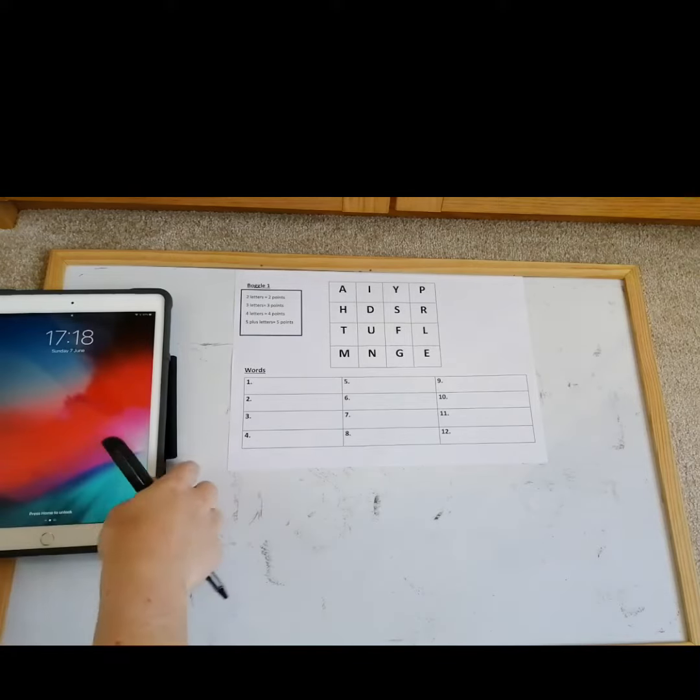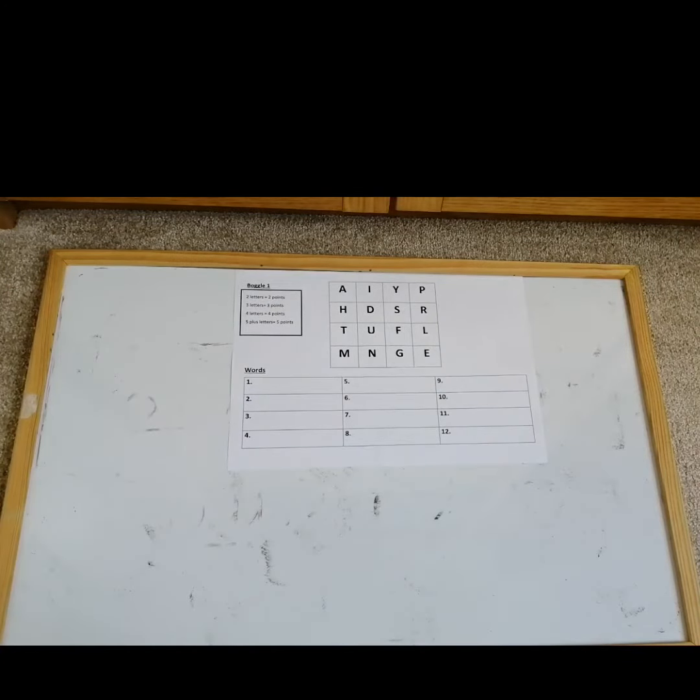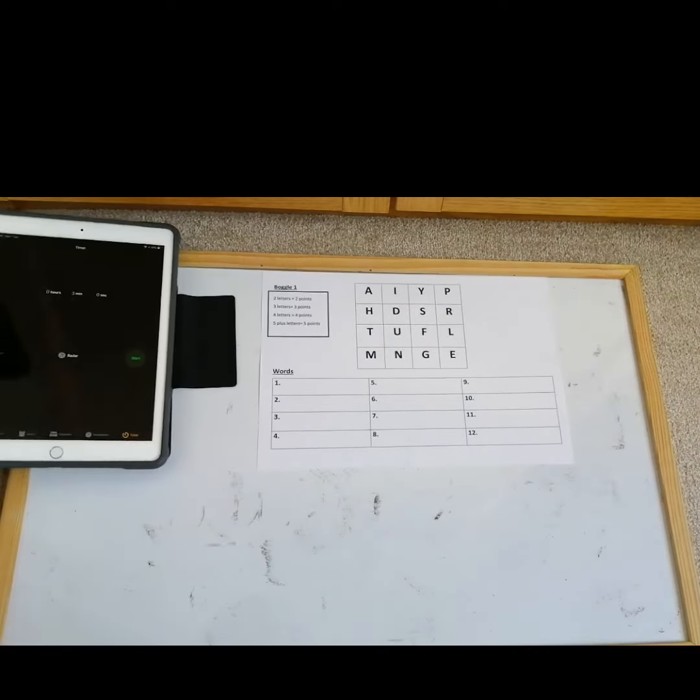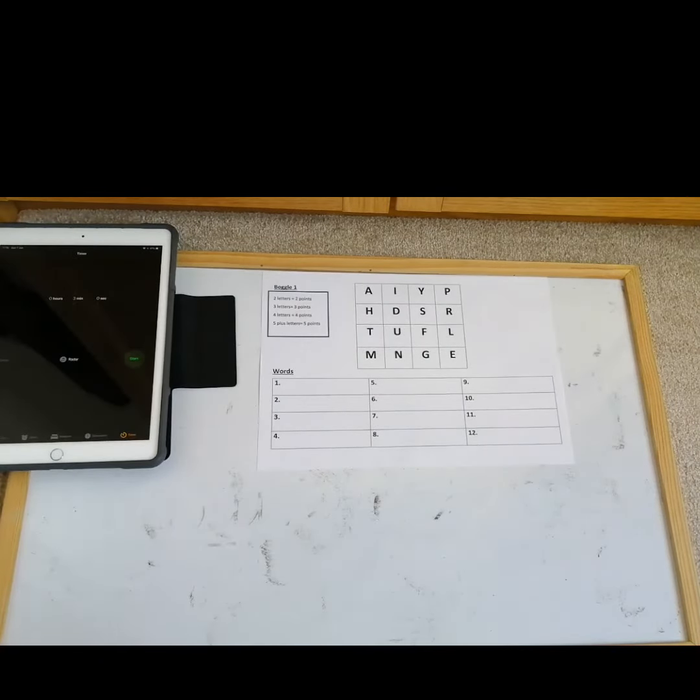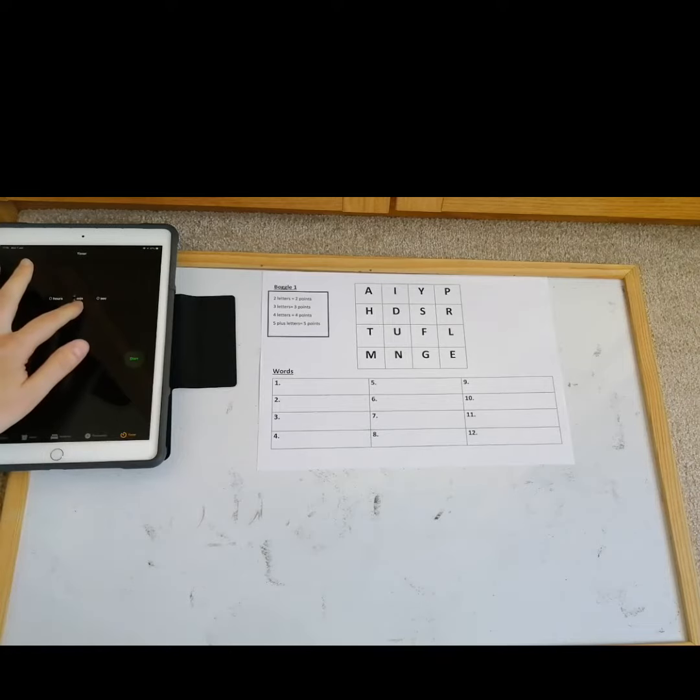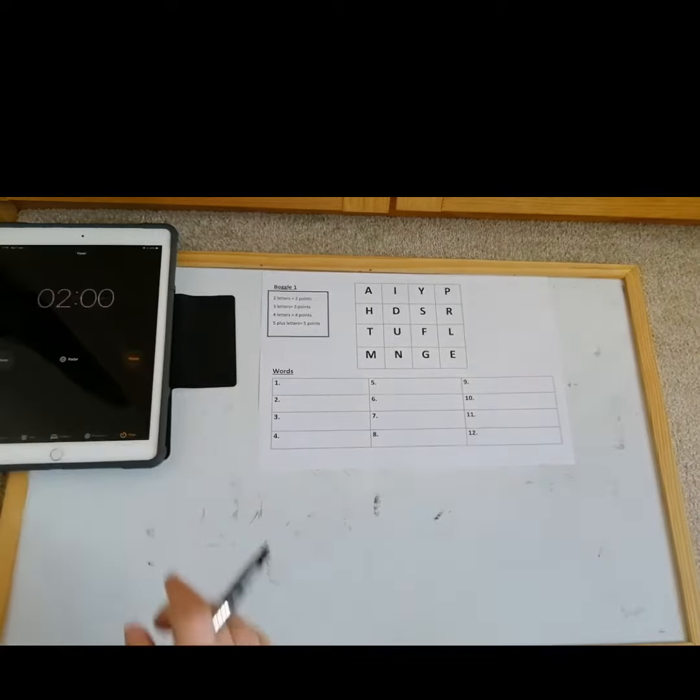Okay, so this is our Boggle game. What you want to do is get a little timer, either a sand timer or maybe your grown-up has a phone or an iPad, or maybe you have a clock or a watch somewhere. Give yourself, well you can decide how long. I'm going to give myself two minutes because I'm a bit of a grown-up. I'm going to start the timer. I've got two minutes to see how many words I can get out of this Boggle.